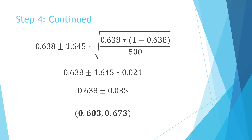We take our sample proportion and add and subtract the margin of error of 0.035. So we have 0.638 plus or minus 0.035 — the form of a point estimate plus or minus the margin of error. Subtracting gives us the lower bound of 0.603, and adding gives us the upper bound of 0.673 of our confidence interval.